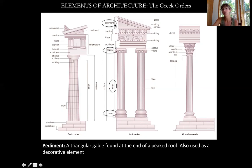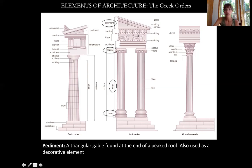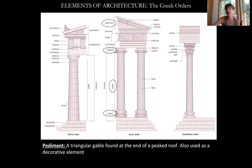Above the capital, and probably most importantly for this lecture, is what we call a pediment. A pediment is a triangular gable found at the end of a peaked roof. The peaked roof makes an elongated triangle at the edge. Oftentimes artists and architects would put sculptures of people in these pediments, and that's what we're going to look at today.